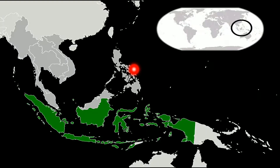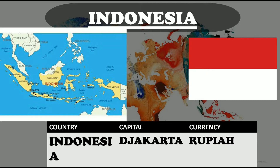The next country is Indonesia — a unitary sovereign state and transcontinental country located mainly in Southeast Asia with some territories in Oceania. It is situated between the Indian and Pacific Oceans and is the world's largest island country with more than 17,000 islands. This is the map of Indonesia. Its capital is Jakarta. Its currency is the Rupiah. And this is the flag — a simple bicolor with two equal horizontal bands: red on top and white on the bottom, in an overall ratio of 2:3.